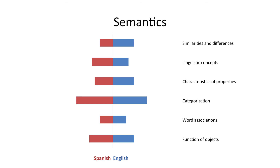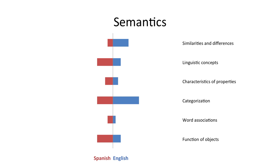Over time the numbers of items in each language by category varied. We ended up with 24 items in Spanish and 24 items in English in our final version. For example, we had many more similarities and differences items in English than in Spanish, but many more functions of objects items in Spanish than in English. So the overall difficulty of the test is the same, but the configuration of items varies between languages.